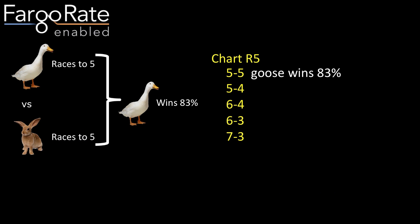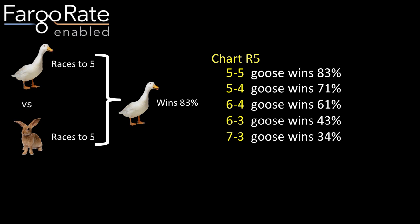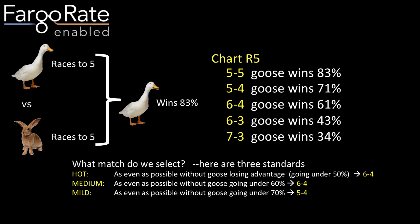Going back to the Goose and the Rabbit: when they played five-to-five, the Goose wins 83% of the time. Here's the Goose's win chance across all match-ups in chart R5. For the top three match-ups, the Goose is still the favorite; for the bottom two, the advantage switches to the Rabbit. In a handicap tournament, which do we pick? This is where hot, medium, and mild handicaps come in. With a hot handicap, we pick six-to-four — the most weight possible without shifting the advantage to the lower-rated player. Medium means as even as possible without the Goose going under 60%. Mild means as even as possible without the Goose going under 70% — never awarding weight that gives the Rabbit greater than a 30% chance of winning.